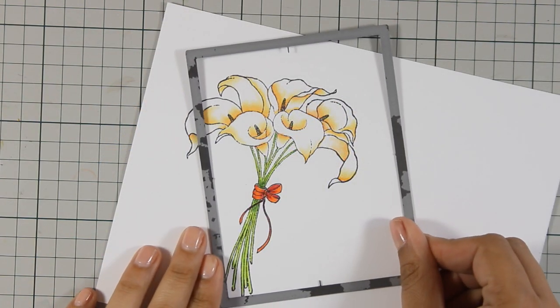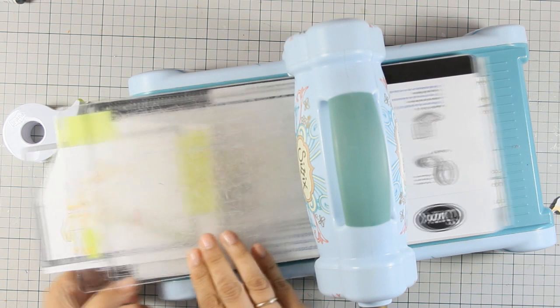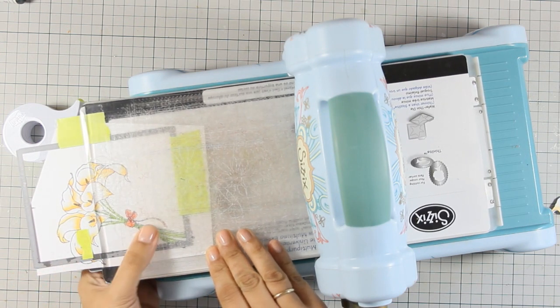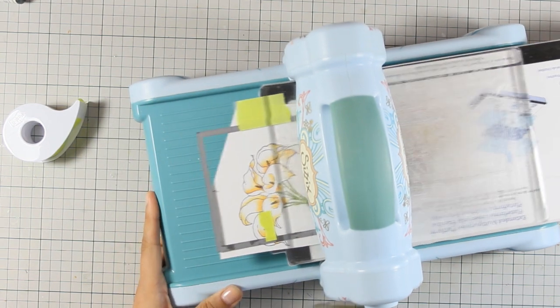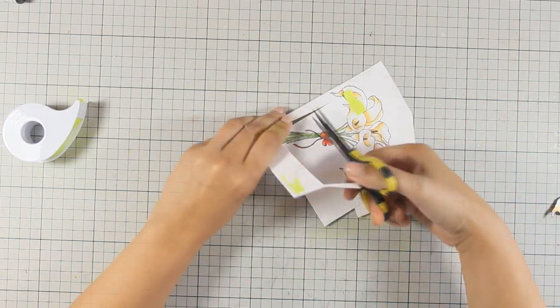To cut out the main panel for my card, I am using a rectangle die on an angle. I am not going to cut it all the way towards the top, but instead I am placing it only halfway on my Sizzix die cutting machine.